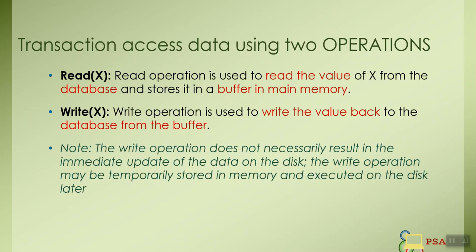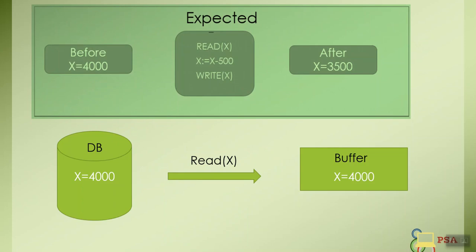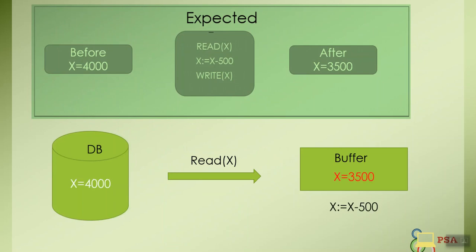Now let's take an example to withdraw rupees 500 from account X through ATM which consists of following operation reading the current balance of X, deducting 500 rupees from account X, and updating to the database. Let's assume that the initial balance of account X is equal to 4000. The first operation reads X value from database and stores it in a buffer. The second operation will decrease the value of X by 500 so buffer will contain 3500.